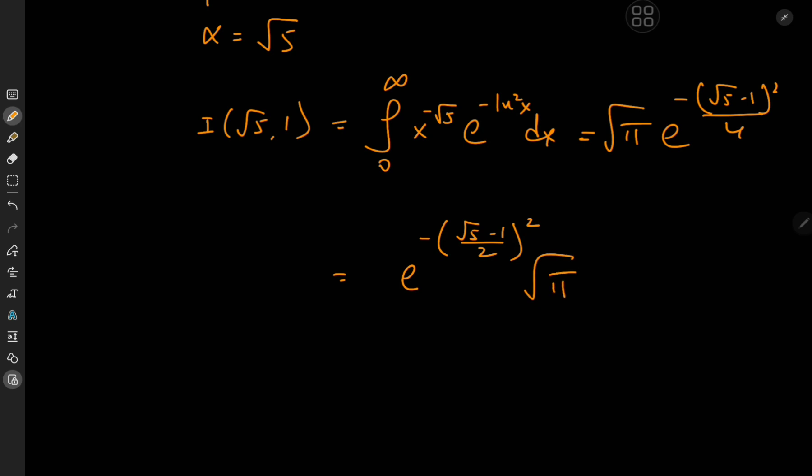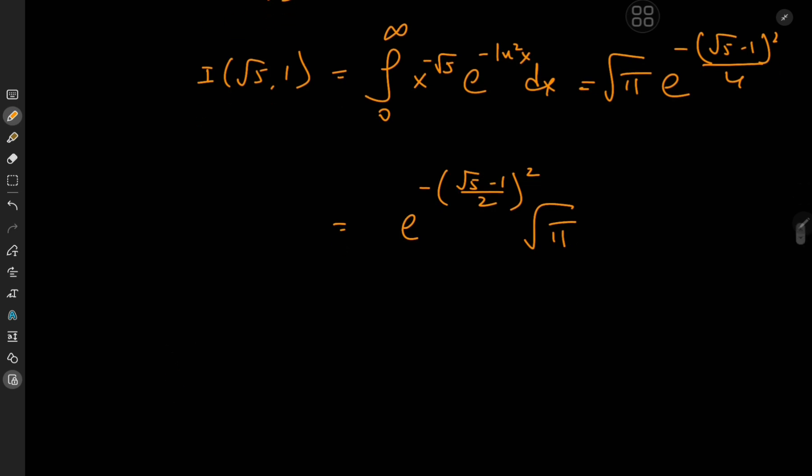And we recognize the argument of the exponential function to be 1 over phi, phi being the golden ratio. So this implies that i of root 5 and 1 equals root pi times e to the negative 1 by phi squared, which I believe is a very fine looking result indeed involving pi e and the golden ratio phi.